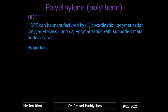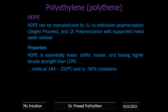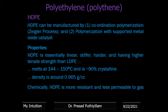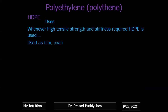HDPE can be manufactured by two methods: coordination polymerization (also known as the Ziegler process) and polymerization with supported metal oxide catalyst. HDPE is linear, stiffer, harder, and has higher tensile strength than LDPE. It melts at 144–150°C and has very high crystallinity up to 90%, compared to approximately 4% for LDPE. Density is around 0.965 g/cc. HDPE is more resistant and less permeable to gases. It is used where high tensile strength and stiffness are required — in frames, coatings, sheets, wire insulation, cables, and pipes.